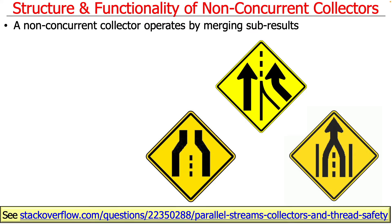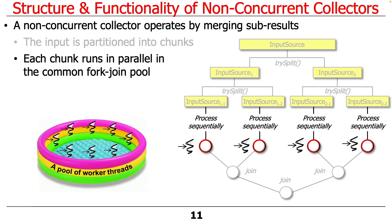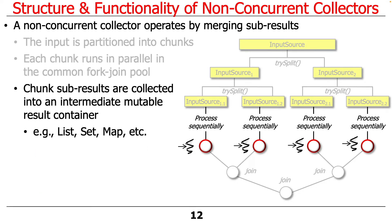Let's talk about the structure and functionality of non-concurrent collectors. A non-concurrent collector works by merging together subresults that are being processed in multiple threads in the common fork-join pool in a parallel stream. Input is partitioned into chunks by spliterators. Each chunk then runs in parallel in the common fork-join pool, and the subresults are collected into an intermediate mutable result container — typically something like a list, set, or map.